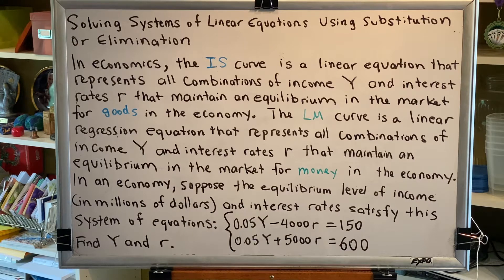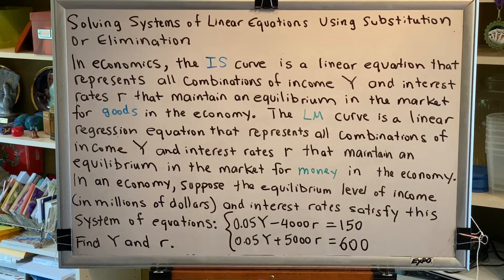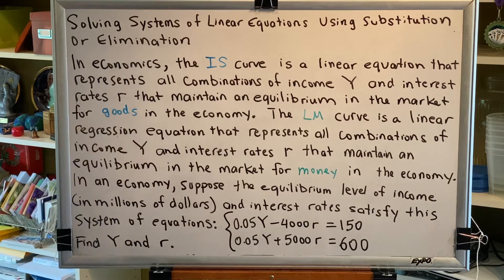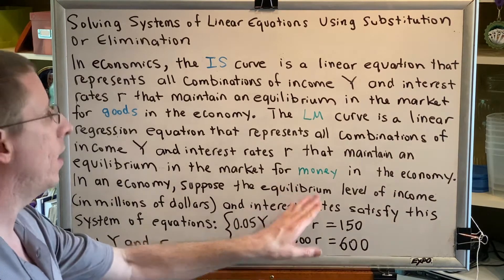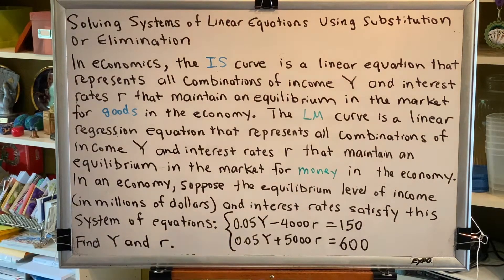In economics, the IS curve is a linear equation that represents all combinations of income Y and interest rates R that maintain an equilibrium in the market for goods in the economy. The LM curve is a linear regression equation that represents all combinations of income Y and interest rates R that maintain an equilibrium in the market for money in the economy.